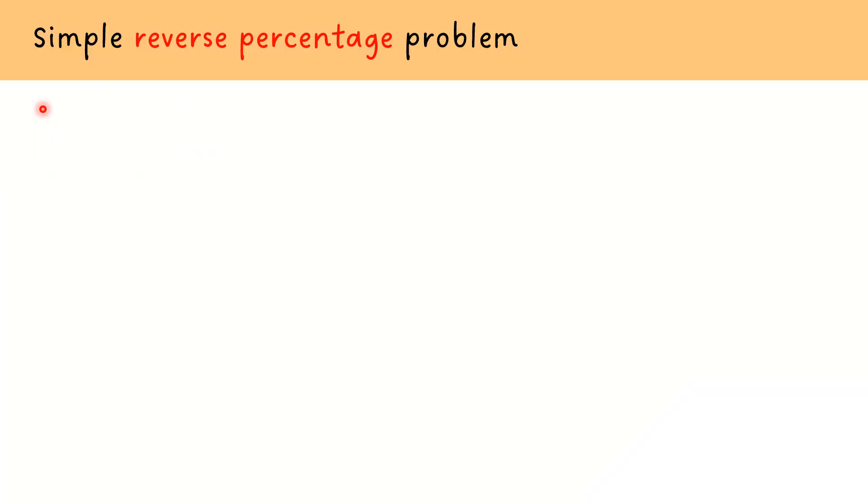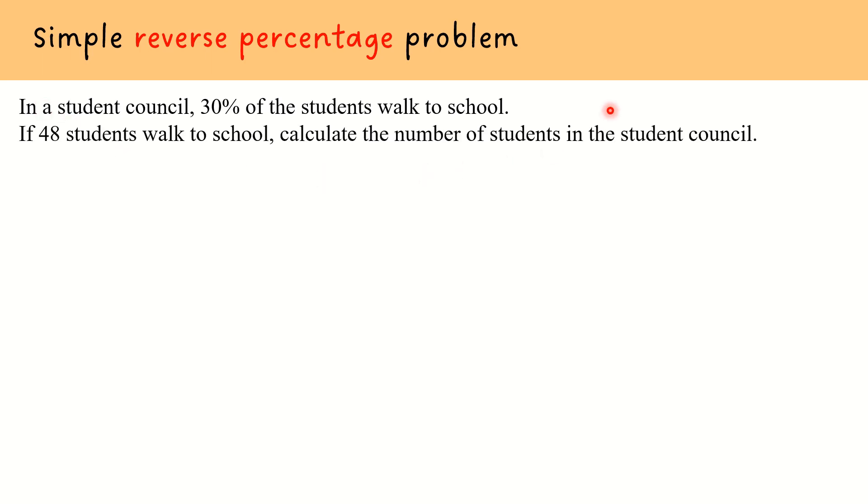Let's start by looking at this simple reverse percentage problem. In the student council, 30% of the students walk to school. If 48 students walk to school, calculate the number of students in the student council. First, we understand the question by noticing that 30% of the students that walk to school is actually equivalent to these 48 students.